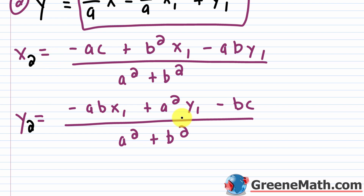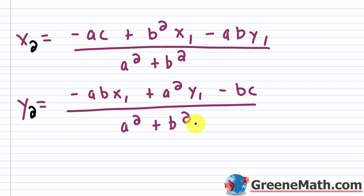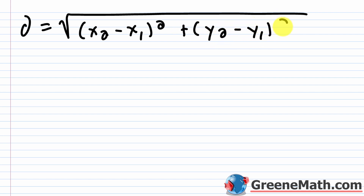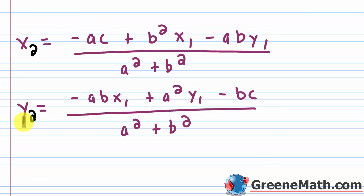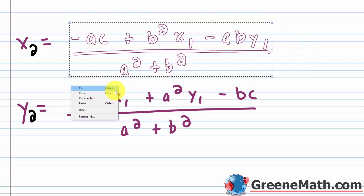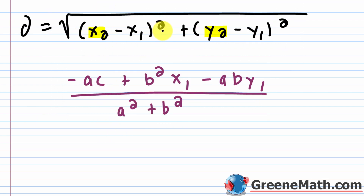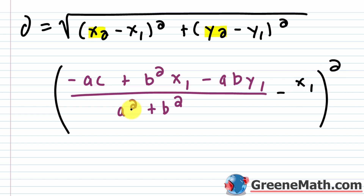Now we plug into the distance formula: d equals the square root of x sub 2 minus x sub 1 quantity squared, plus y sub 2 minus y sub 1 quantity squared. I'll work on the x sub 2 minus x sub 1 quantity squared piece first. Getting a common denominator of a squared plus b squared, and being careful that the x sub 1 times the quantity a squared plus b squared term is fully subtracted.